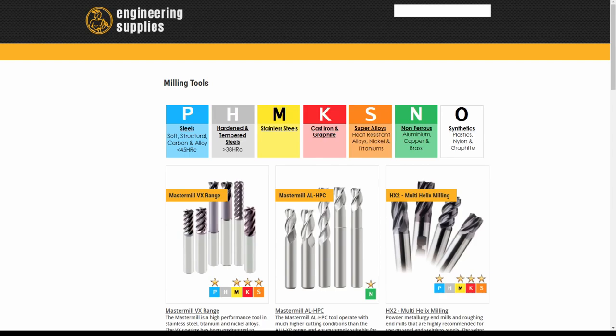There is a special chart that determines what materials fall into what category for machining purposes. This chart has seven categories, being steels, hardened steels, stainless steels, cast iron, super alloys, non-ferrous, and other plastics.